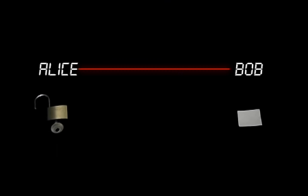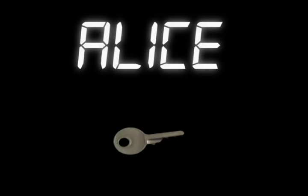Lock and unlock are inverse operations. Alice could buy a lock, keep the key, and send the open lock to Bob. Bob then locks his message and sends it back to Alice. No keys are exchanged.